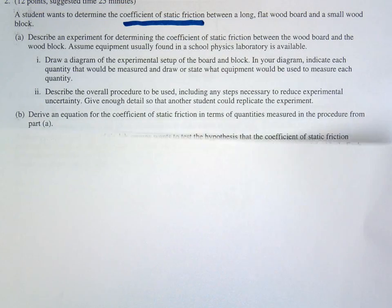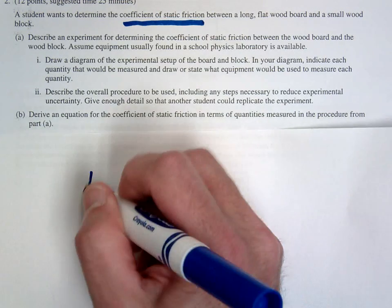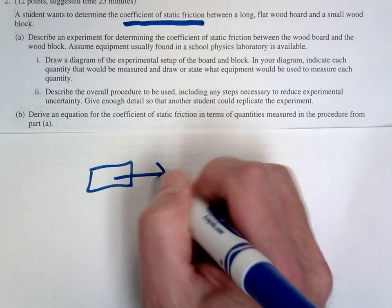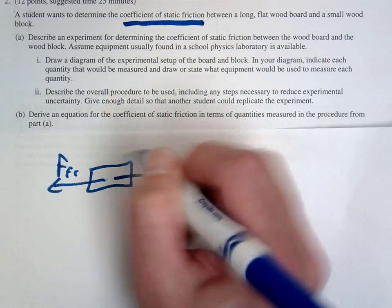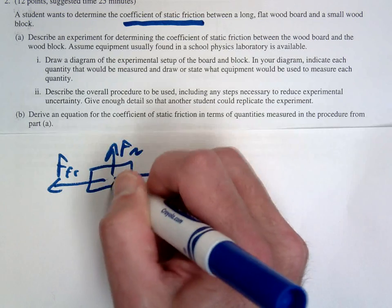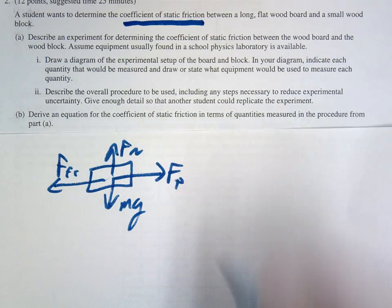Let's derive our equation. So to derive our equation if we do our FBD here we're going to have a force pull, we're going to have friction this way, we're going to have our normal force, we're going to have our gravity coming down.